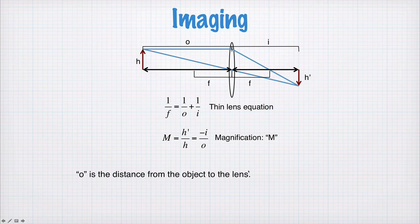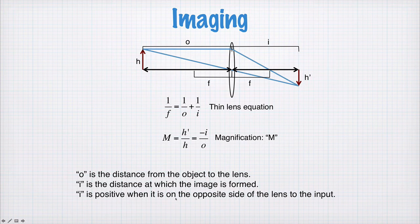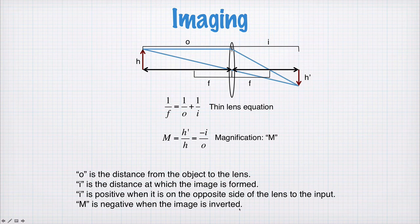So to summarize, O is the distance from the object to the lens, I is the distance at which the image is formed, I is positive when it's on the opposite side of the lens to the input object, and M is negative when the image is inverted. So this example here, the image is inverted, and so M is negative.